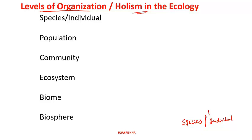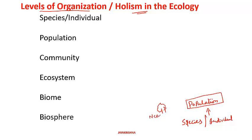A group of such individuals forms what is called as population. Population is nothing but a group of same species — maybe the same type of tree like neem tree, or maybe the group of tigers. Group of tigers, group of lions — a group of any such same species is called as population.